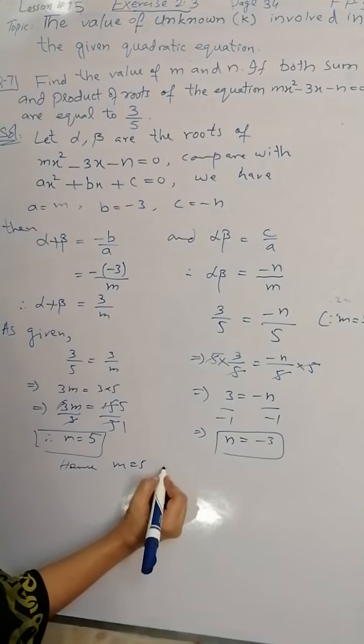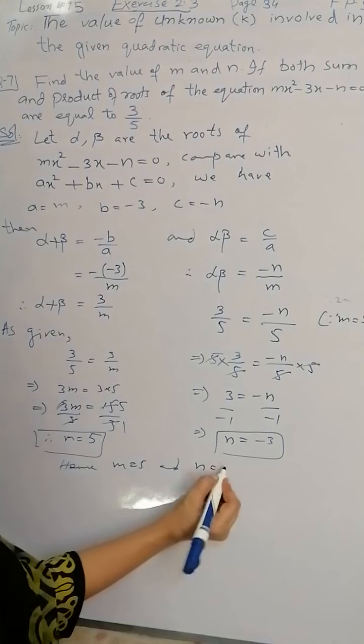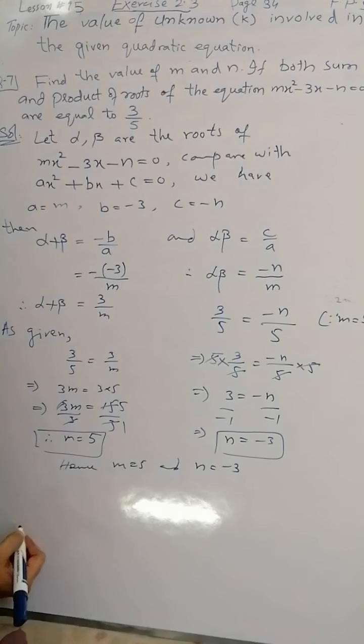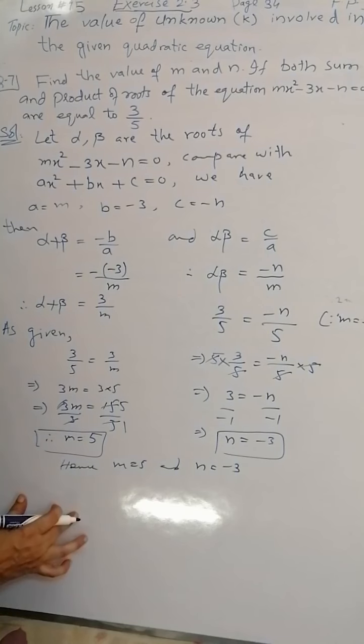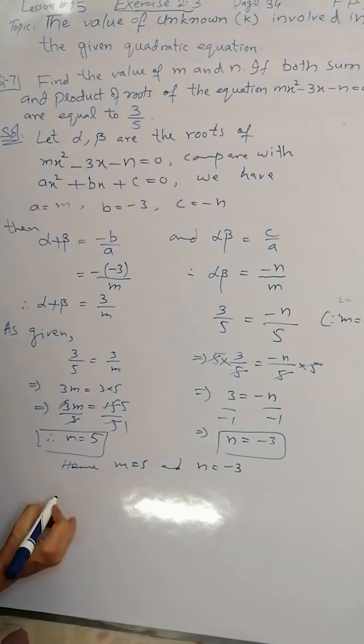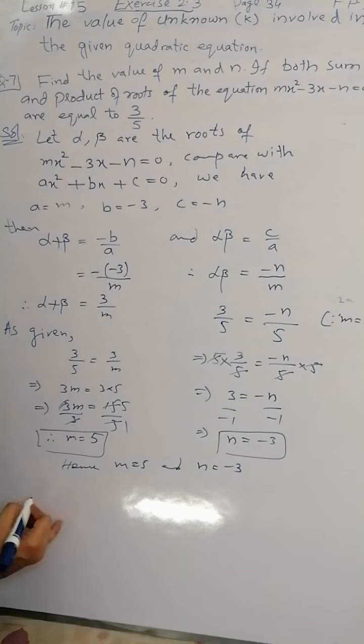m is equal to 5 and n is equal to -3. Students, I hope you understand this. Thus this is the end of exercise 2.3. All the related questions must be practiced by the students. Thanks, stay safe, stay home.